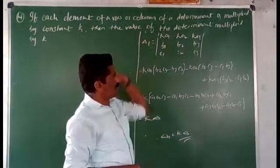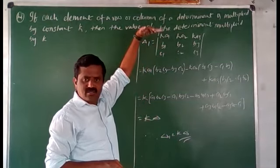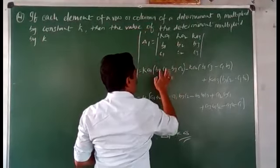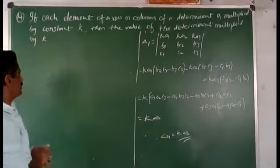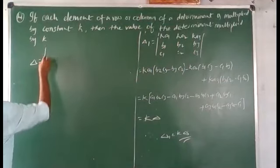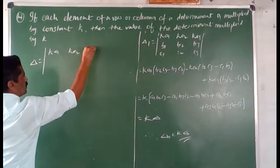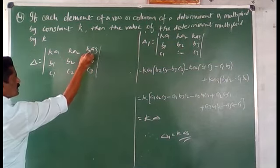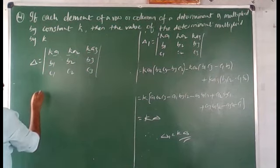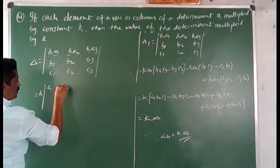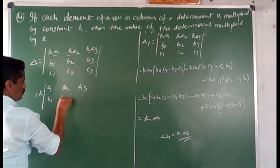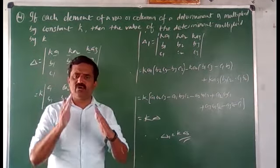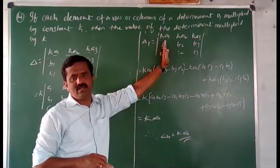Remember, this property is very important. We can take a constant or common factor from an entire row or entire column. For example, if delta has k·a1, k·a2, k·a3 in the first row with b1, b2, b3 and c1, c2, c3, we can take out the constant k from the first row: delta = k times the determinant of a1, a2, a3; b1, b2, b3; c1, c2, c3.